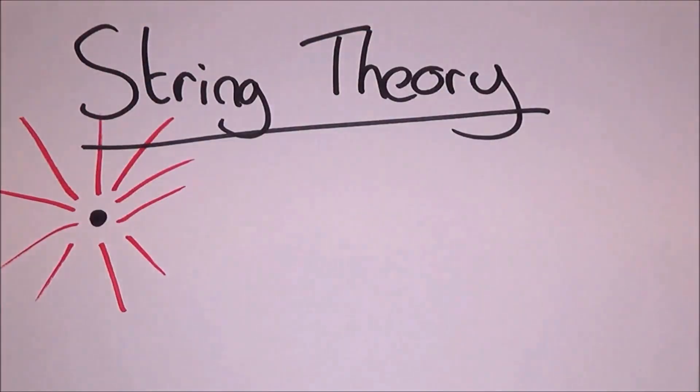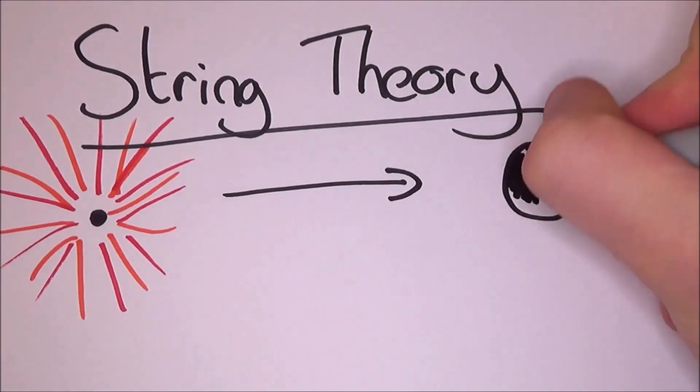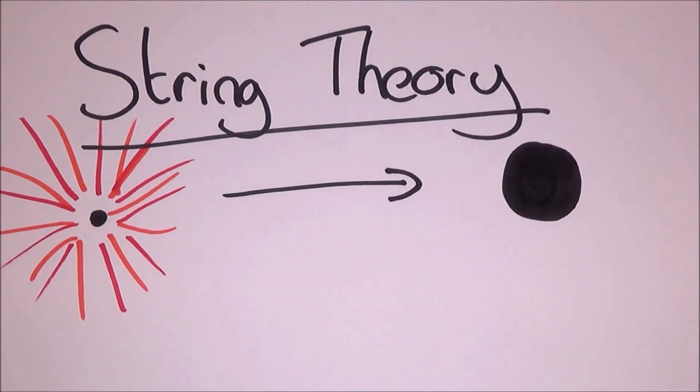String theory allows us to learn about the Big Bang and the center of black holes. Einstein's theory of general relativity breaks down in these places, and they are the two most interesting places in the universe. So because the theory breaks down, learning about these places is beyond our reach.